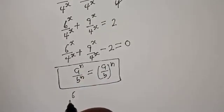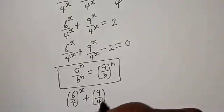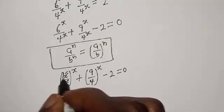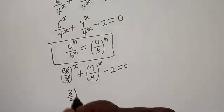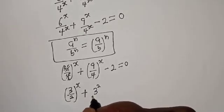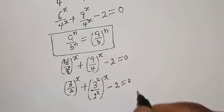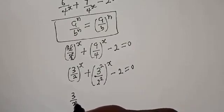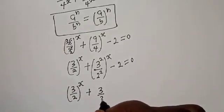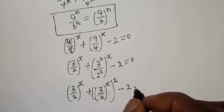And here we have 6 over 4 raised to the power of s, plus 9 over 4 raised to the power of s, minus 2 is equal to 0. Simplifying: 6 over 4 is 3 over 2, so we get 3 over 2 raised to the power s. And 9 over 4 is 3 squared over 2 squared, giving us 3 over 2 raised to the power s, squared, minus 2 is equal to 0.